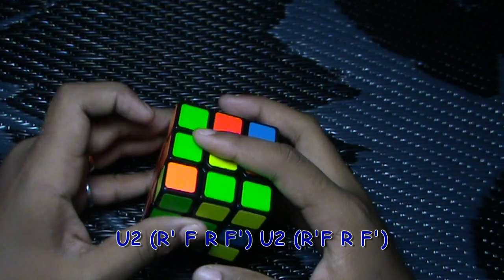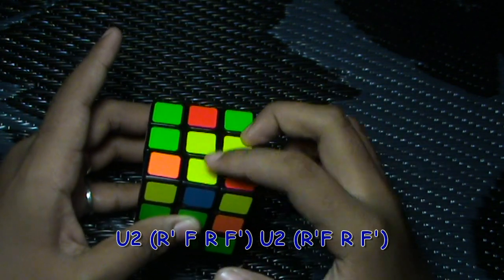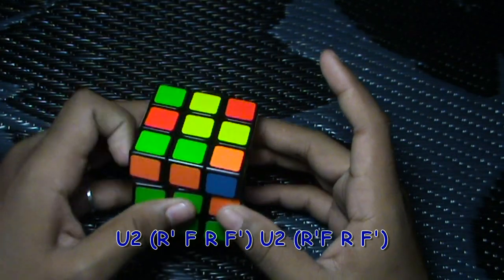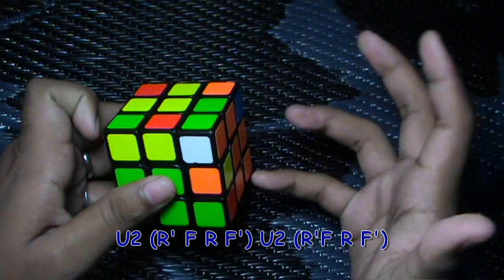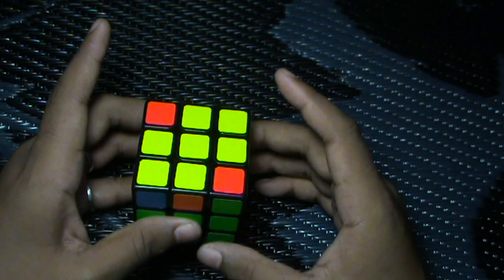What I do is I do a U2, keep the F2L pair at the back, and then I do a sledgehammer in here so that I can orient two of the edges. Then do a U2 prime or U2 again and then I insert this with sledgehammer to orient all of the edges.